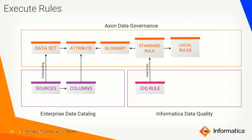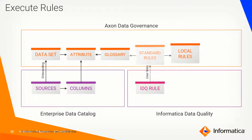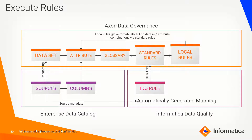You create one standard rule for a given glossary. Once you create that standard rule — let's say you want to check the validity of your email field — automatically multiple local rules are created for each and every attribute. Once these local rules are created, they start the journey and go touch the metadata because the connections are internally shared, then automatically a mapping will be created and this will all be automated for you. Each and every local rule for a given attribute will go to the source metadata and verify the data with respect to the rule that you are checking.